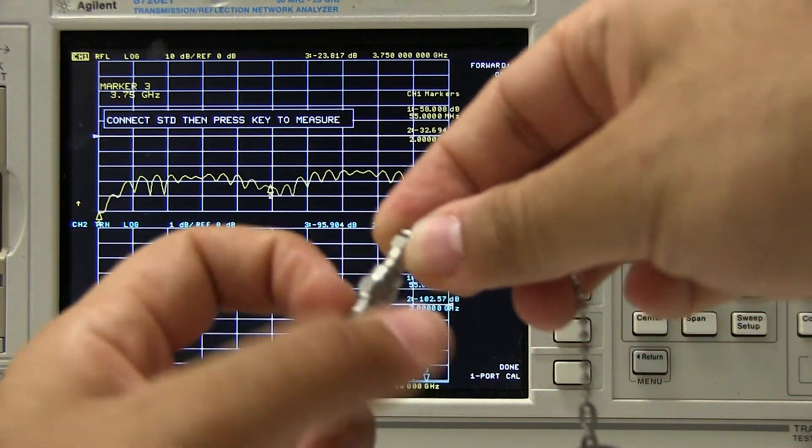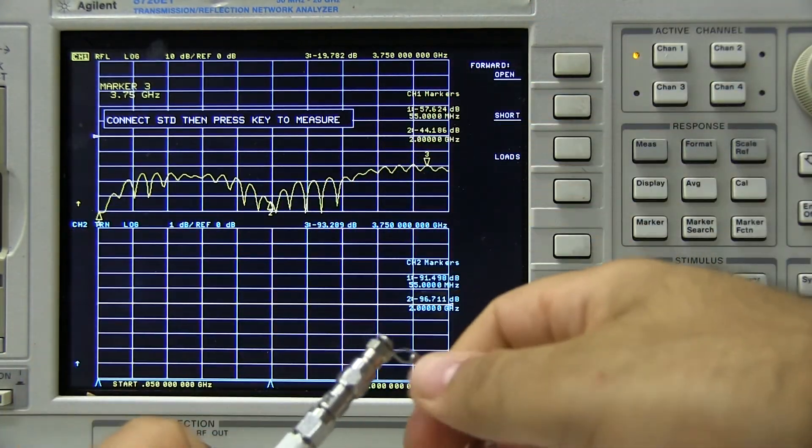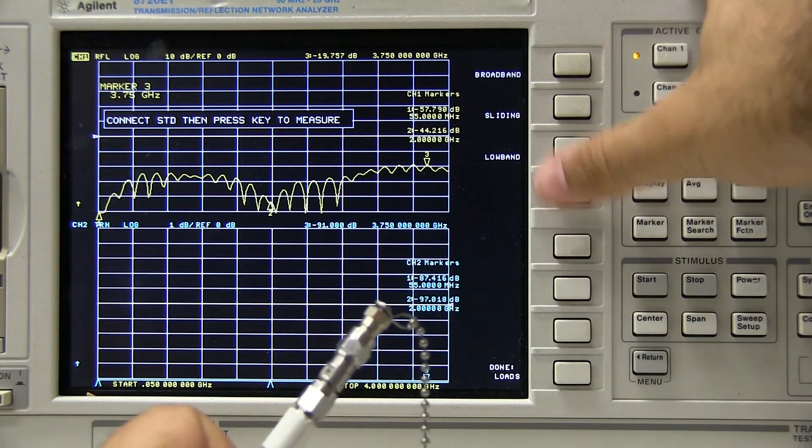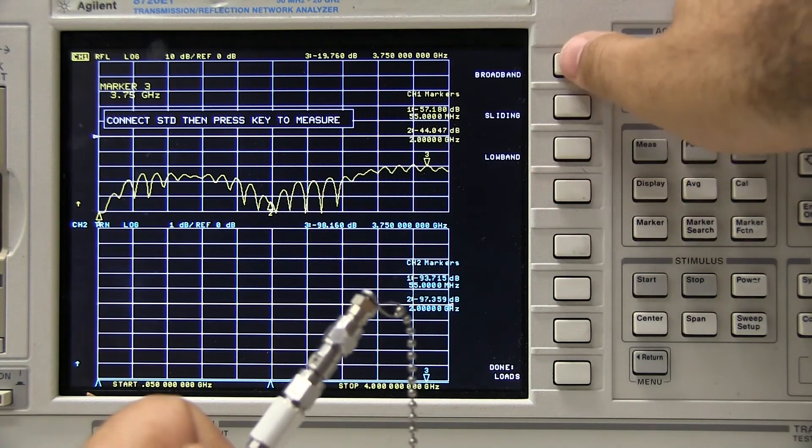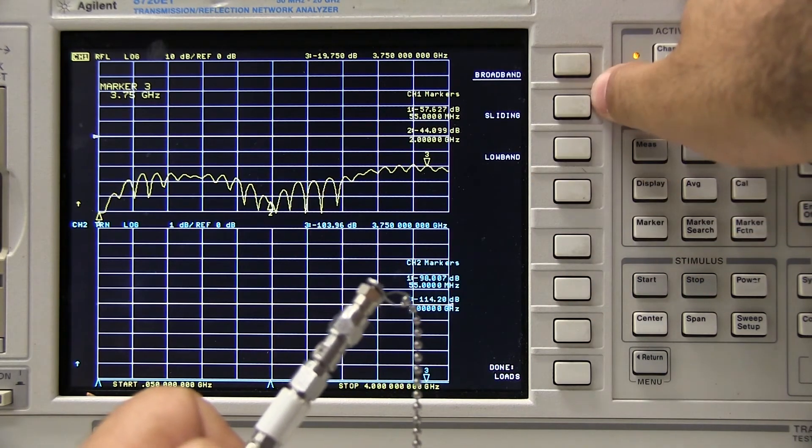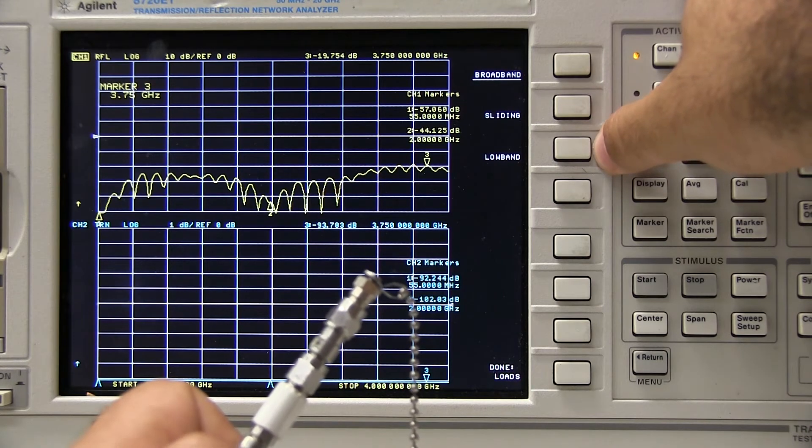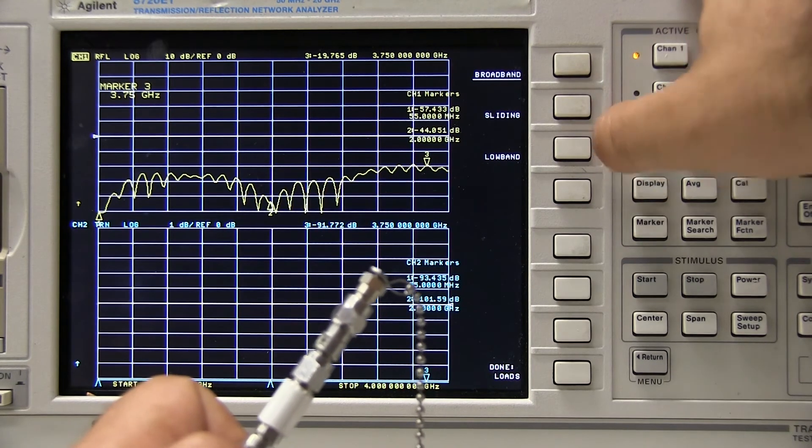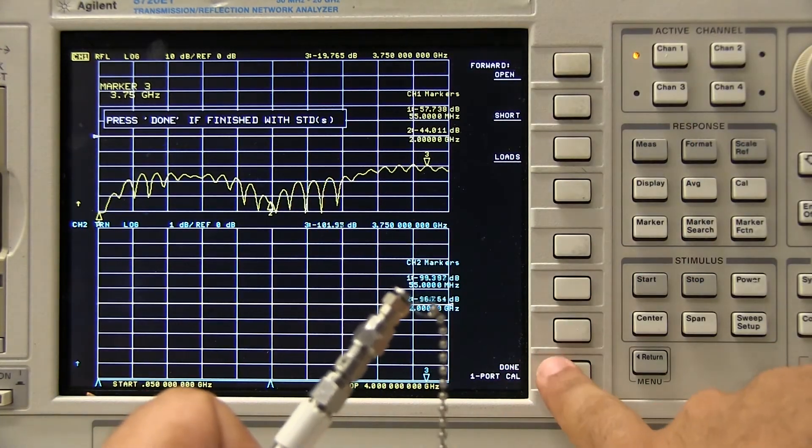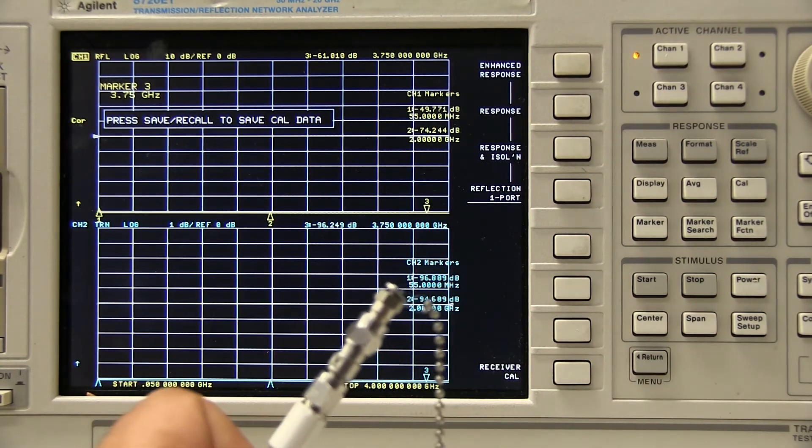Because we're telling it, we're giving it known open shorts and loads. So now we're at the load stage, and it asks us what kind of load we're using, and right now we're using a broadband load. It gives you the option to connect a sliding or a low band load to further fine tune the calibration. For our purposes, we're not going to do that set right now. So now it asks us if we're done. It's going to compute the calc coefficients.